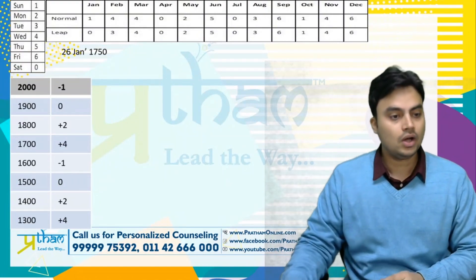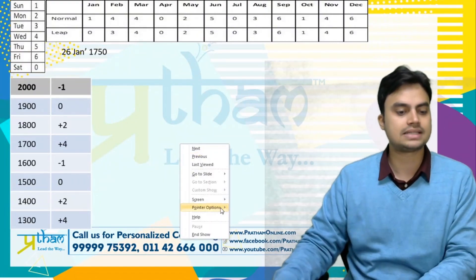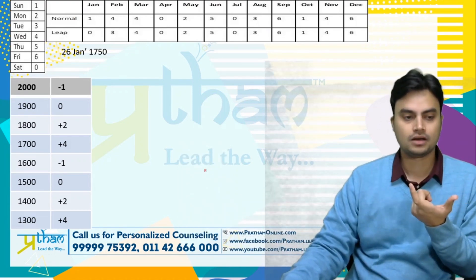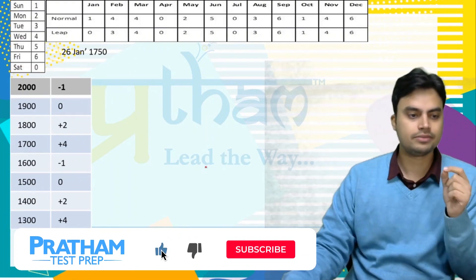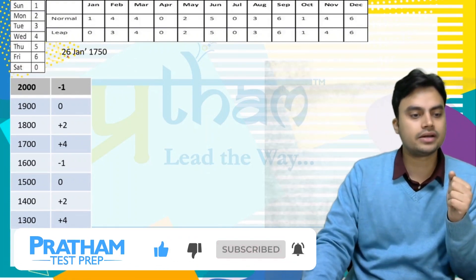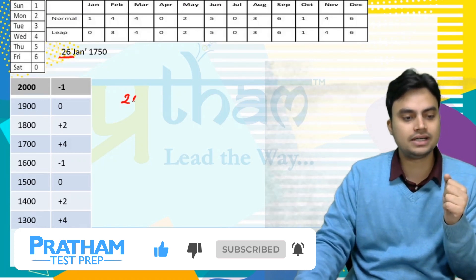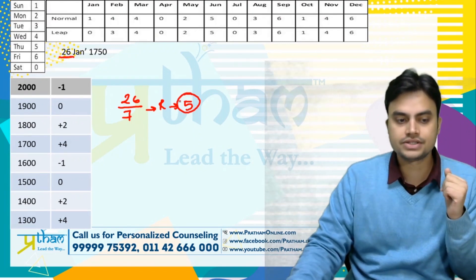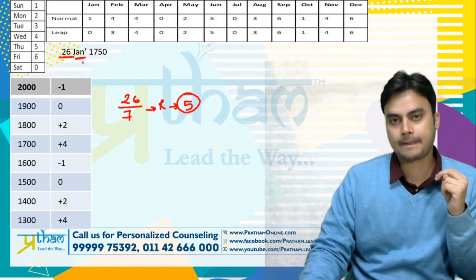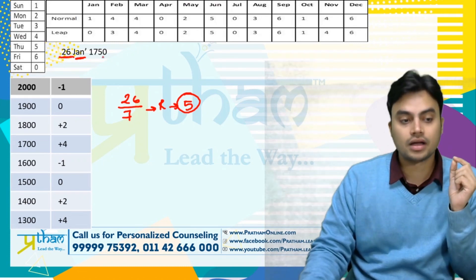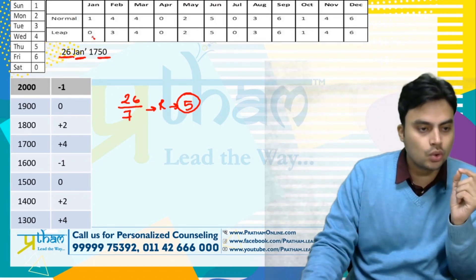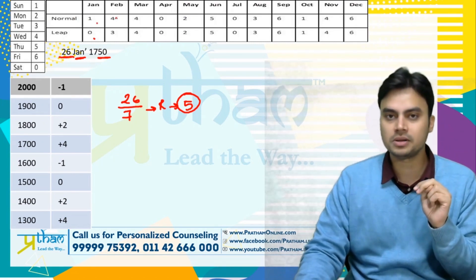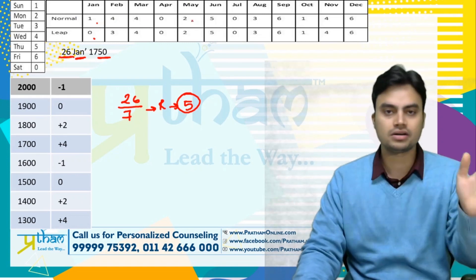Question hamare saamne hai: 26th January 1750 — 26th January 1750 ko what was the day? Quick revision bhi karata jaunga. Sab se pahle, 26 divided by 7 — remainder will be 5. Second step: January hai. Dhyan rakhiye, agar leap year hai to January ka code 0 hoga, agar normal year hai to January ka code 1 hoga. Ye sirf 2 months mein hota hai — January aur February mein.